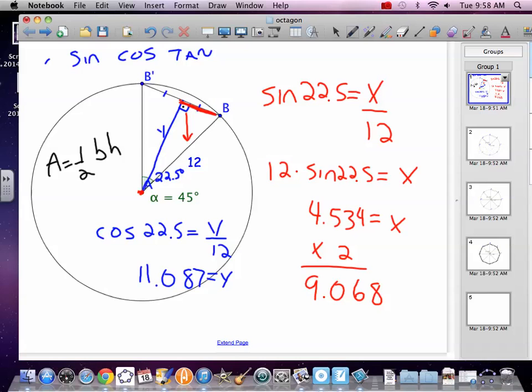Now, I don't need to double that, because that's just the height. And so now you would take your base, which is the 9.068, times 11.087, divide by 2, multiply by half, same thing. And you find the area of that triangle.